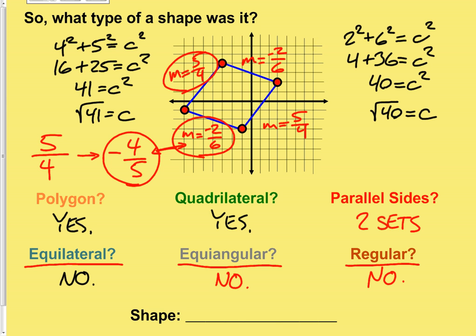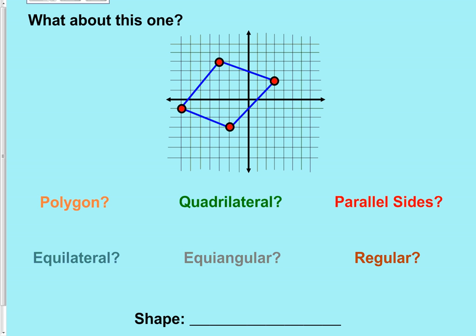So: not equilateral means not a rhombus; not equiangular means not a rectangle; therefore definitely not a square. The most specific name we can attach to this shape is a parallelogram. Notice how many skills they're asking you to pull together all in one problem — this is why test writers like questions like this. Let's go through one more example.